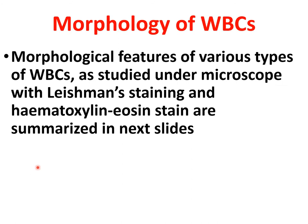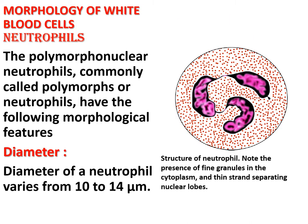The morphological features of the various types of WBC are studied under the microscope with stains used as Leishman stain and hematoxylin-eosin, summarized in the next slides. So first of all, neutrophil.